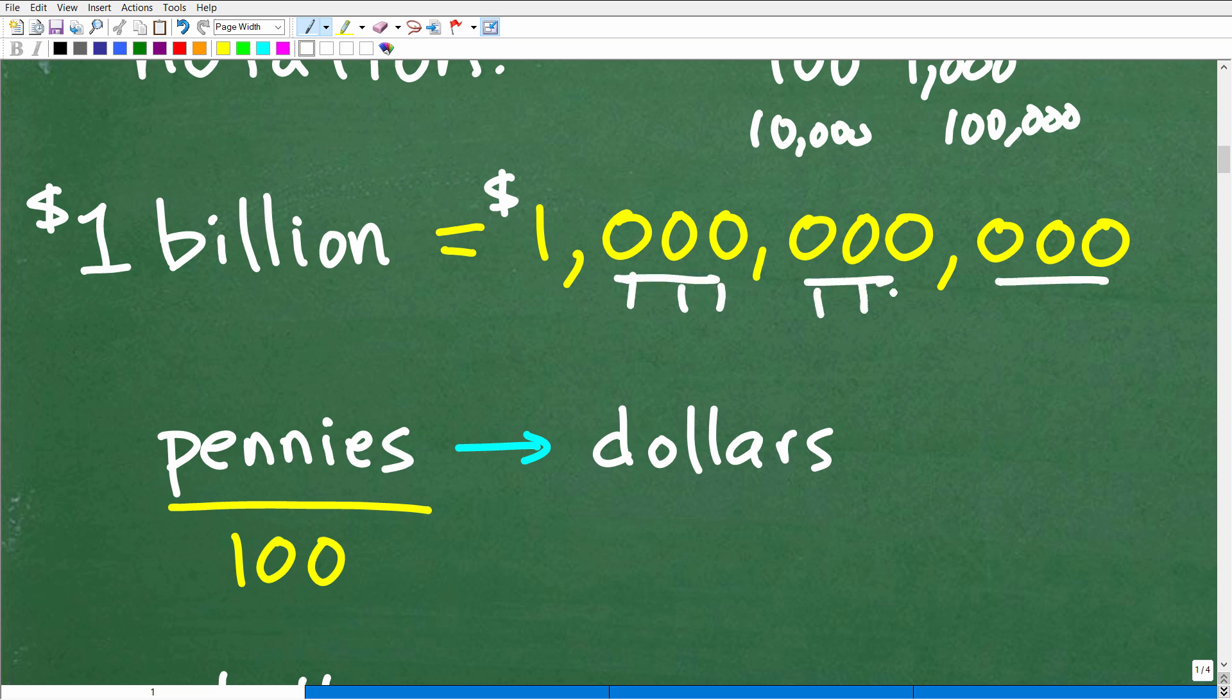A billion is a one, and then you have nine zeros, right? One, two, three, four, five, six, seven, eight, nine. And you have a one right here. This is a billion dollars, or one billion mathematically. So it is a very large number.